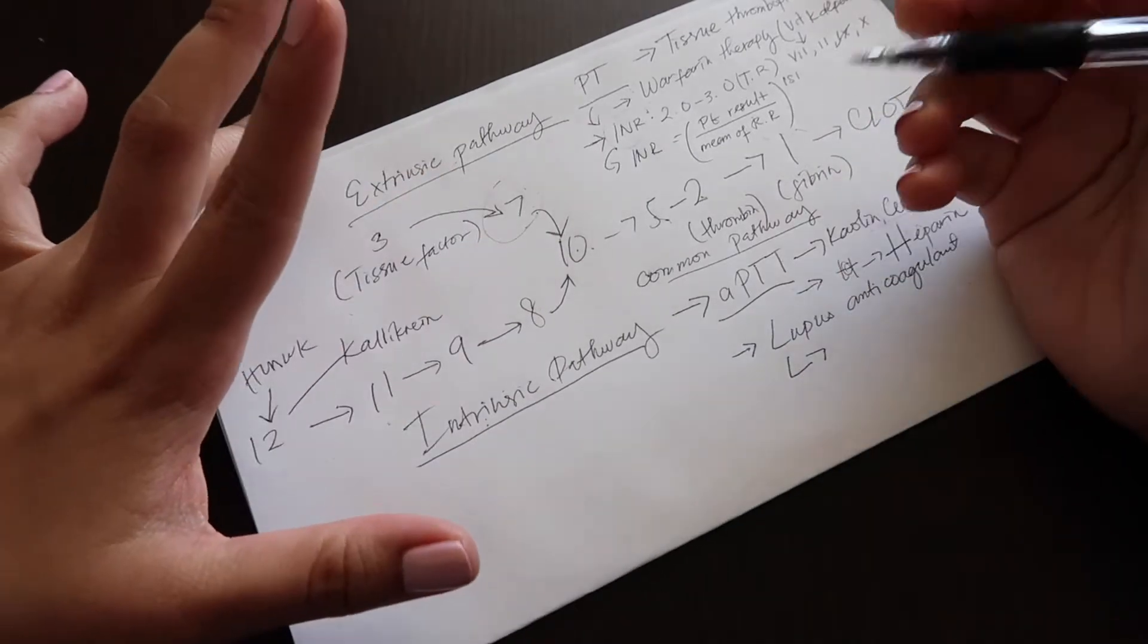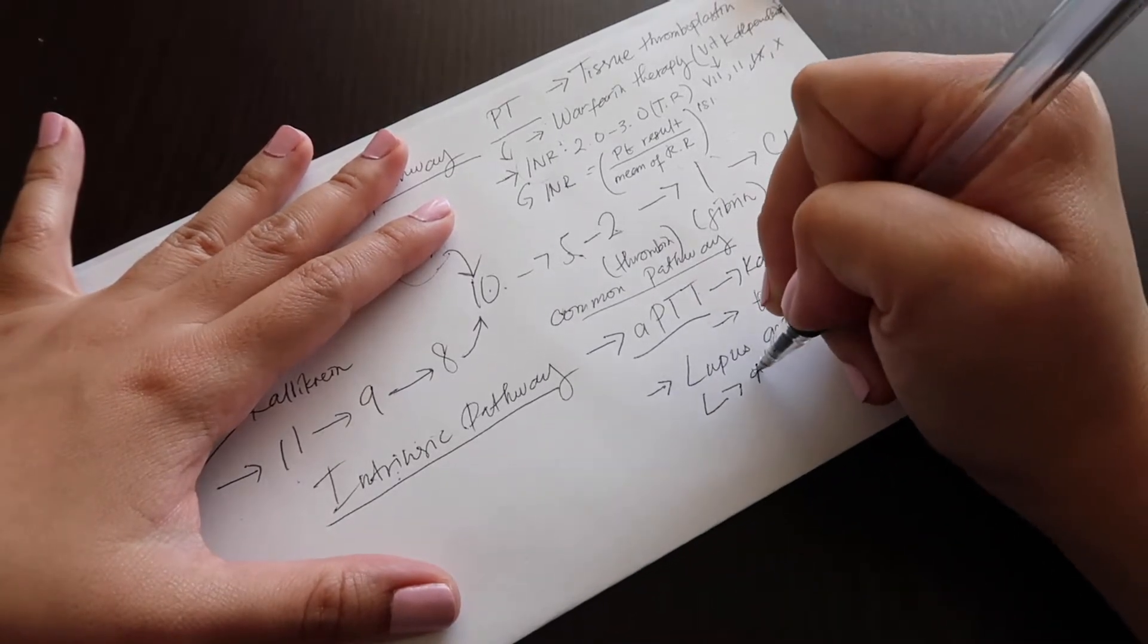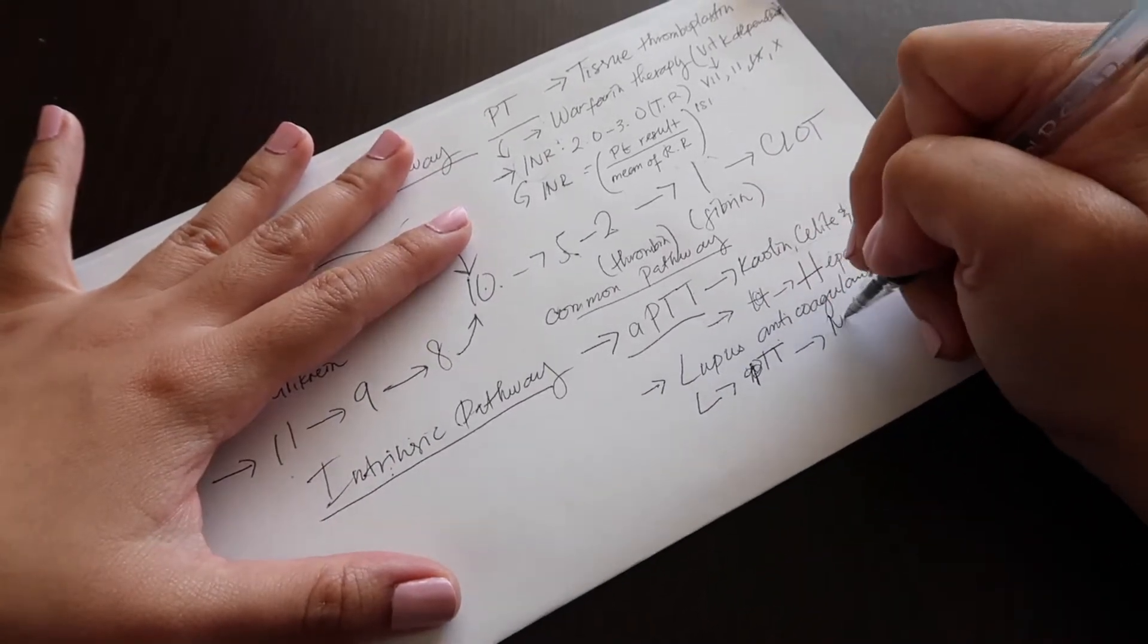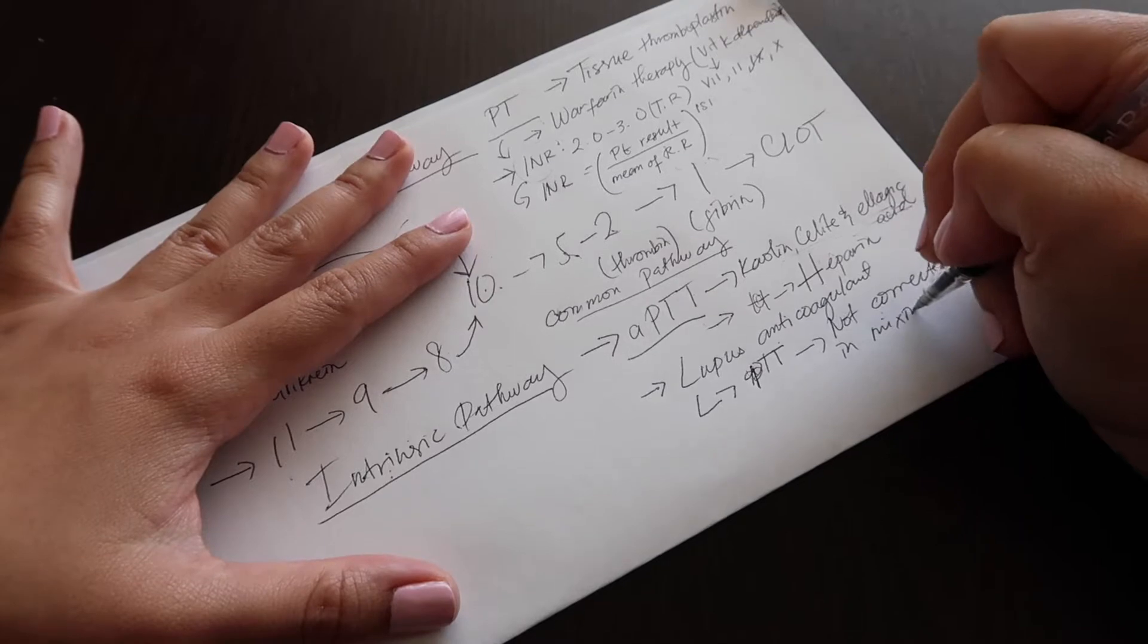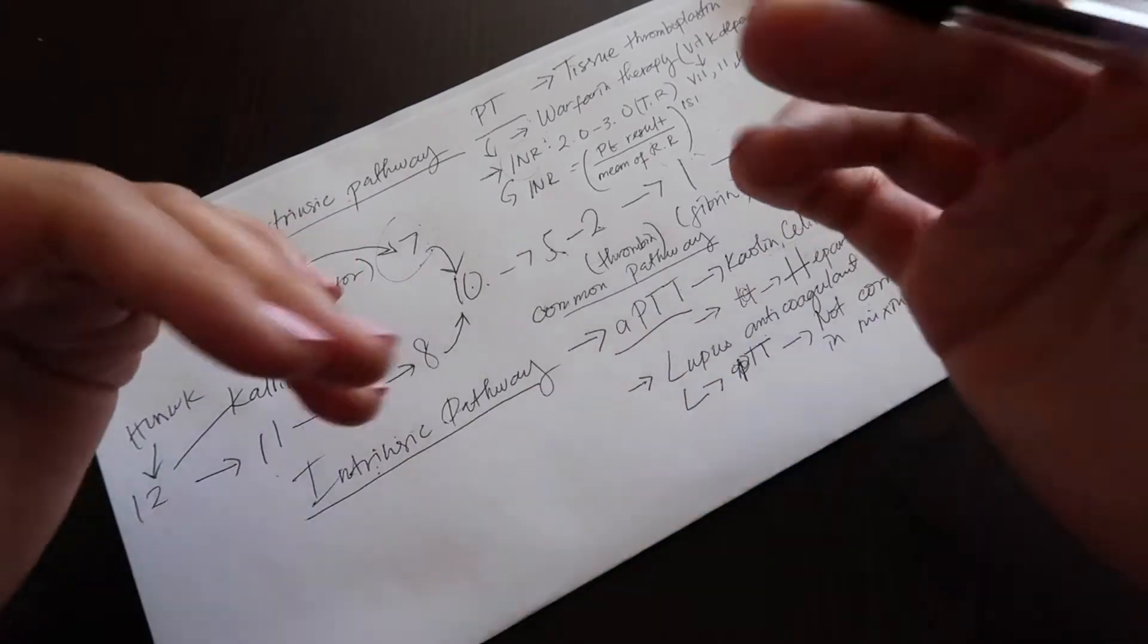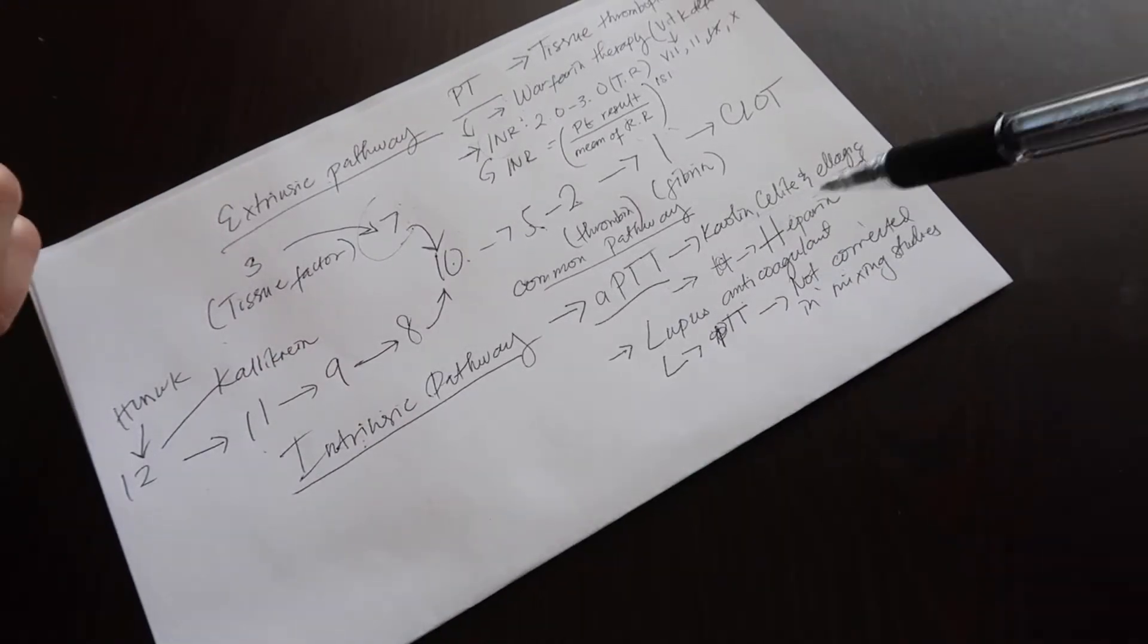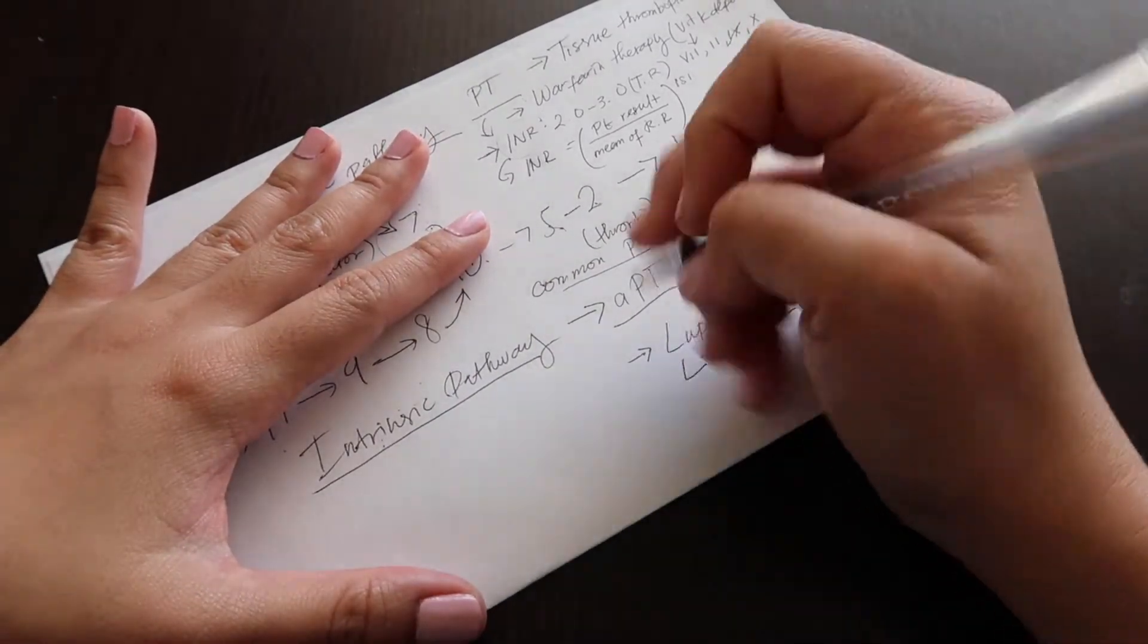And so that's lupus anticoagulant. By saying that something is interfering with your cascade, that means that when your APTT is prolonged because of this, it is not corrected in mixing studies with normal plasma. Because your factors are fine, it's just that something is interfering with it from working, and that's the lupus anticoagulant. So you identify the problem when you do mixing studies and the PTT is still prolonged.